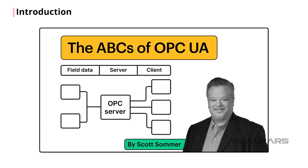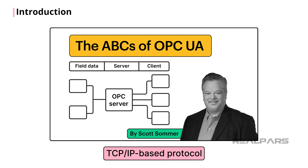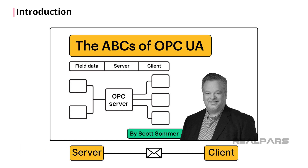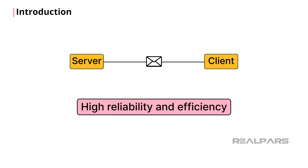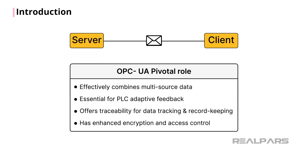In a previous video, I covered the ABCs of OPC Unified Architecture or OPC UA, and described how this TCP/IP-based protocol allows automation engineers to share data at the control system level in real time with high reliability and efficiency. Now, I will show how OPC UA can provide benefits to the dairy industry in the milk production process.